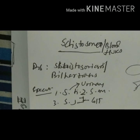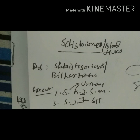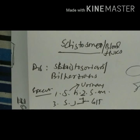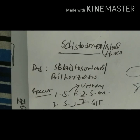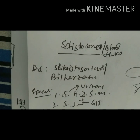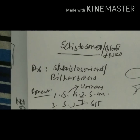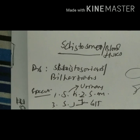Under the genus Schistosome there are three important species. Schistosoma haematobium usually resides in the vesical plexus of veins. The other species, Schistosoma mansoni and Schistosoma japonicum, usually reside in the mesenteric plexus of veins. Schistosoma mansoni and japonicum affect the gastrointestinal tract, whereas Schistosoma haematobium affects the urinary tract, because of their presence in different venous plexuses causing different infections in different places.